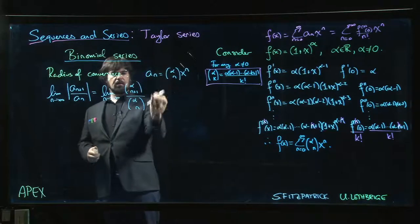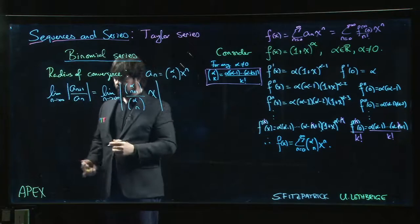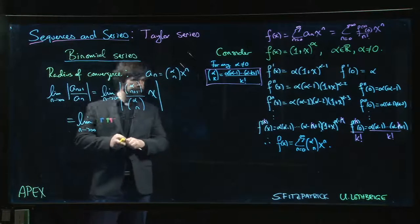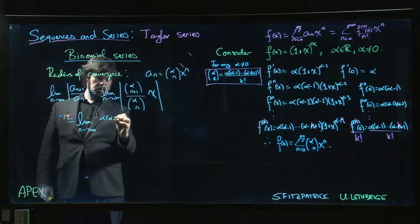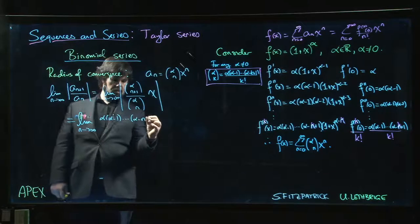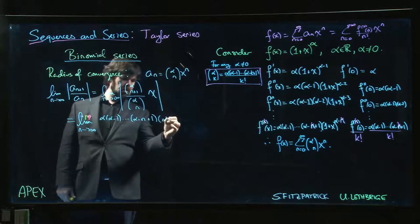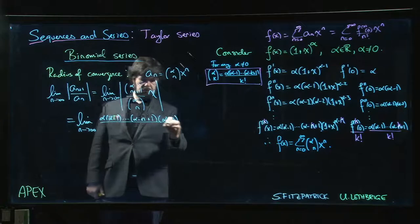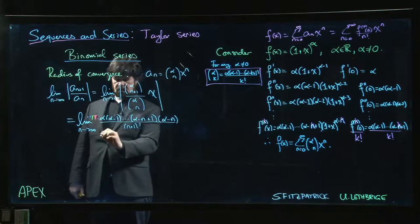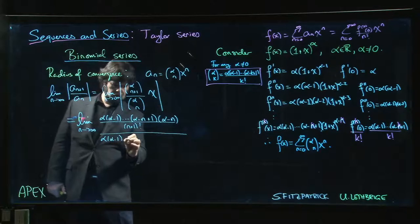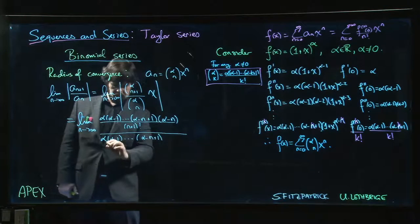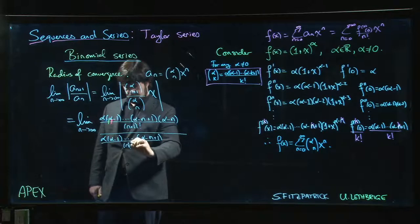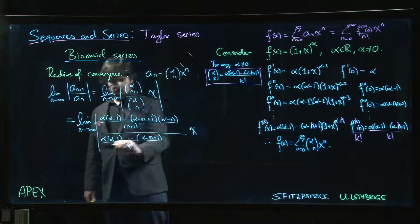And of course, we have x to the n+1 over x to the n. Those will just cancel, leave us with x. So let's expand this out and see what we get. Up top, we've got alpha, alpha minus 1, down to alpha minus n+1. And then the next one is going to be alpha minus n. If I replace n by n+1, the plus 1 cancels with that plus 1. Divided by (n+1) factorial. That whole thing divided by alpha, alpha minus 1, down to alpha minus n+1, over n factorial times our x. Still taking the absolute value.